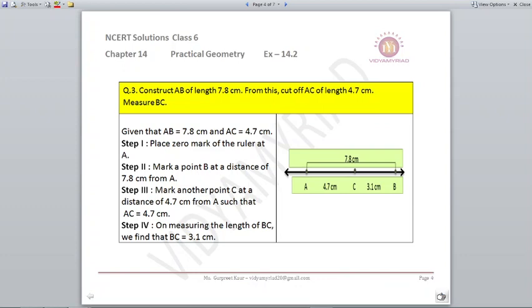Now we are told that we need to cut 4.7 centimeters as AC. So what we are going to do is you can take the help of a compass, stretch 4.7 centimeters, keep the needle at A and cut the arc on AB. So that point is considered as C, so your AC is 4.7 centimeters. So what is BC? BC will be 7.8 is the total AB, subtract 4.7, that comes out to be 3.1 centimeters.